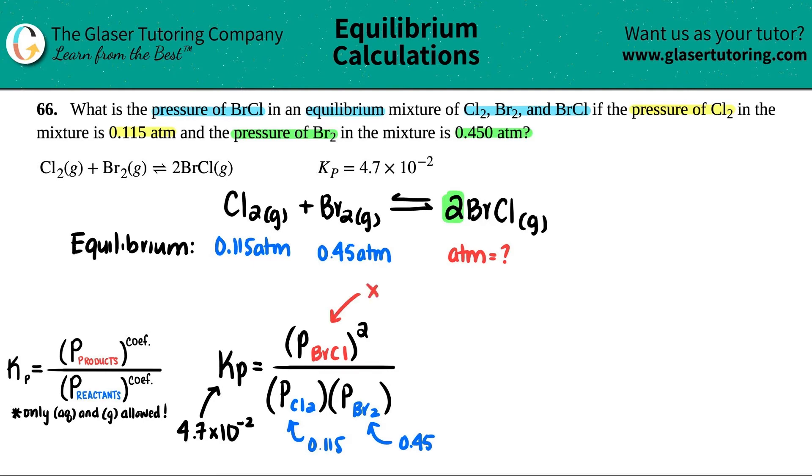Let's plug it in. 4.7 × 10⁻² equals something over something else. We got x squared divided by 0.115 for the Cl₂, and then we're going to multiply it by the 0.45.